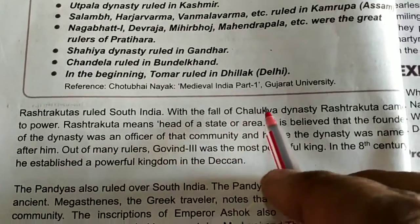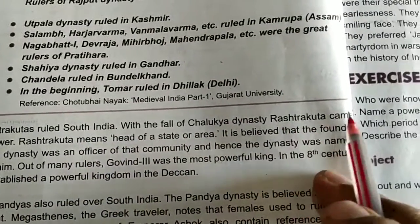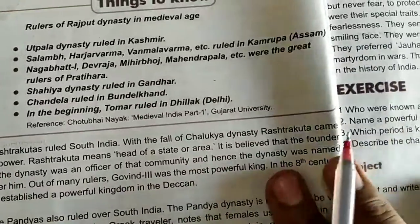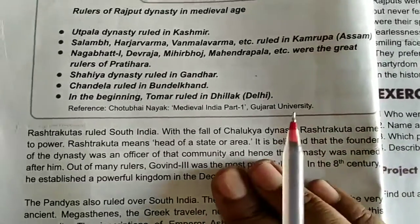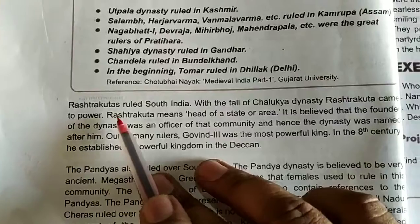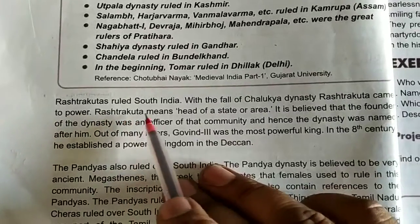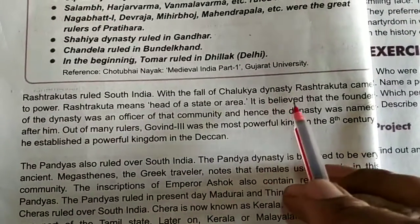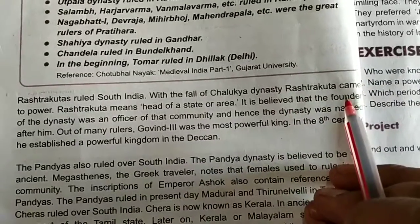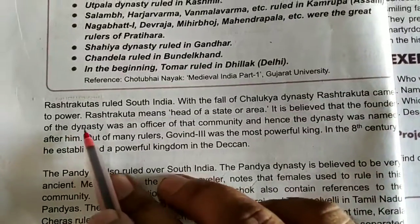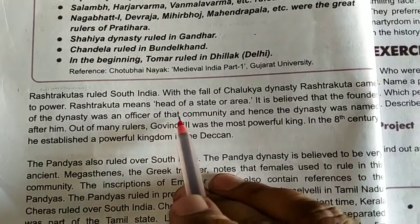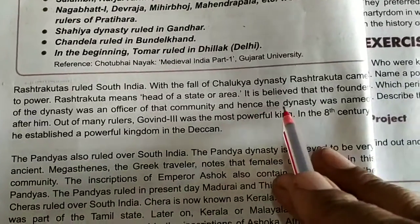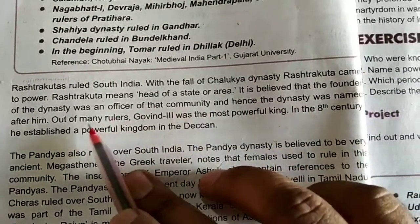With the fall of the Chalukya dynasty, the Rashtrakutas came to power. The word 'Rashtrakuta' means head of a state or area. It is believed that the founder of the dynasty was an officer of that community, and hence the dynasty was named after him.